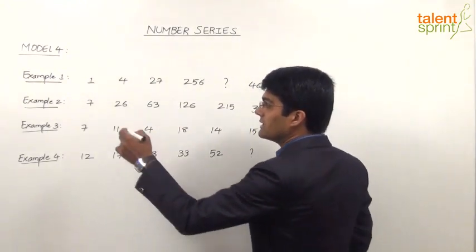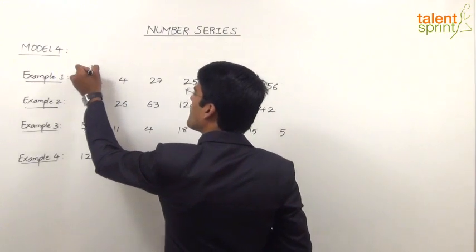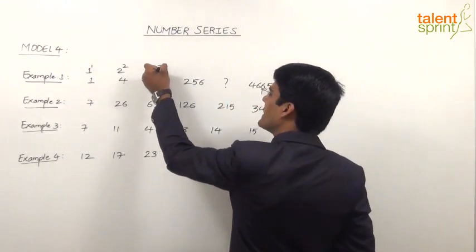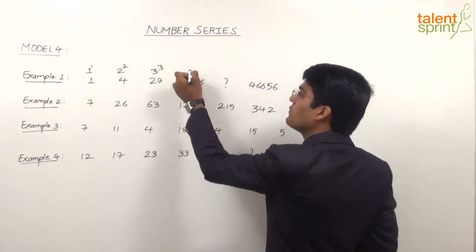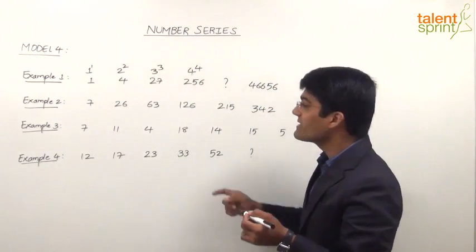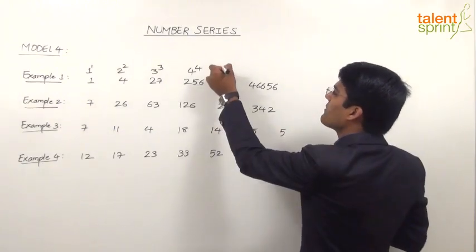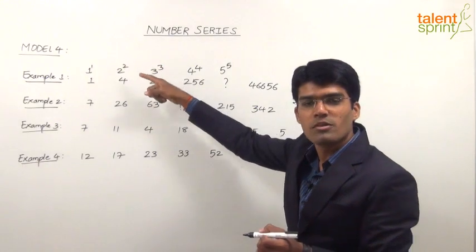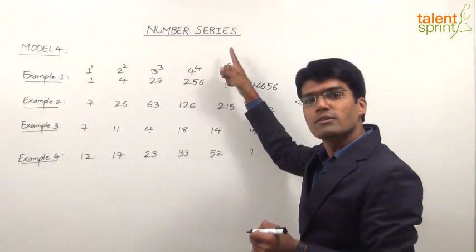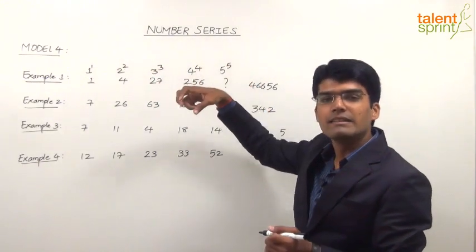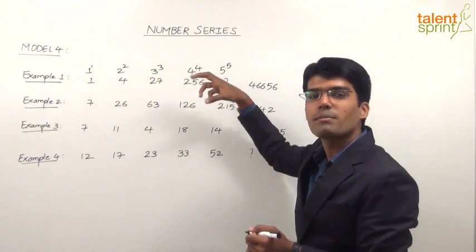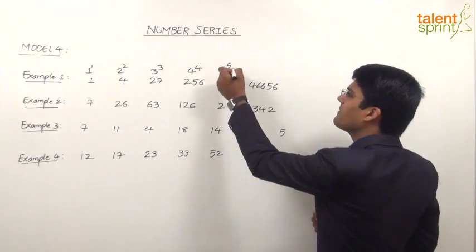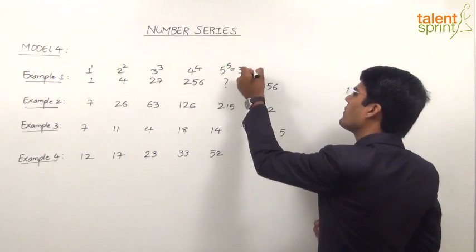If you observe properly, this one here can be taken as 1 power 1, 4 can be taken as 2 power 2, 27 can be taken as 3 power 3 and 256 is nothing but 4 power 4. So it is pretty obvious that question mark should be equal to 5 power 5. They are in the form of 1 power 1, 2 power 2, 3 power 3, 4 power 4. So next one is 5 power 5. 5 power 5 is 3125.